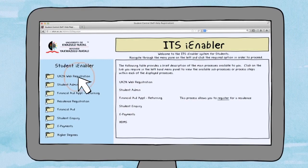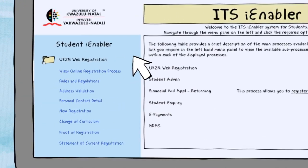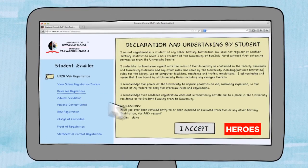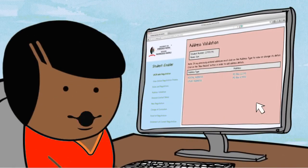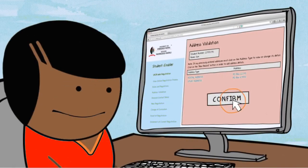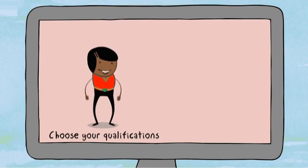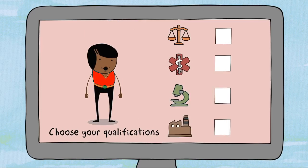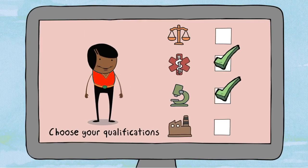Click on the UKZN web registration link on the left to expand it. Read and accept the terms and conditions. Check and confirm your contact details. Next, confirm your qualification and choose your relevant majors.